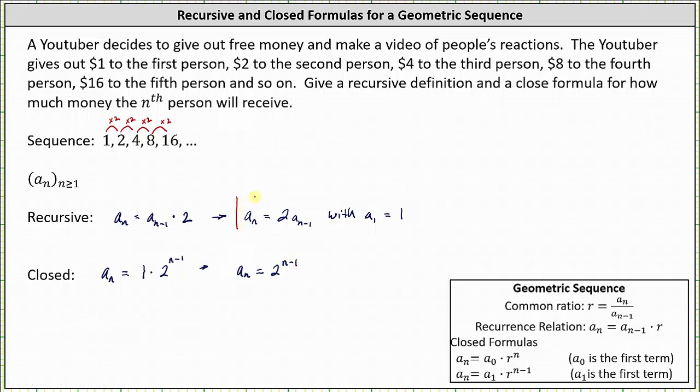So here we have the recursive definition and the closed formula for the same geometric sequence, which indicates how much money the nth person will receive. I hope you found this helpful.